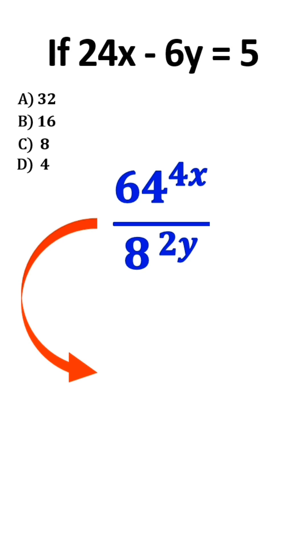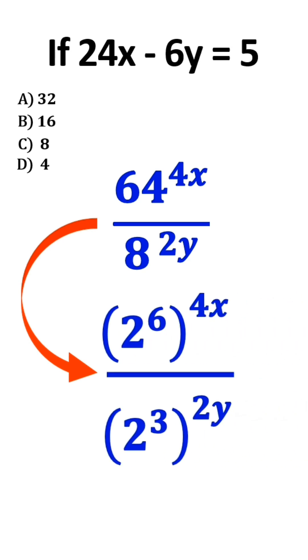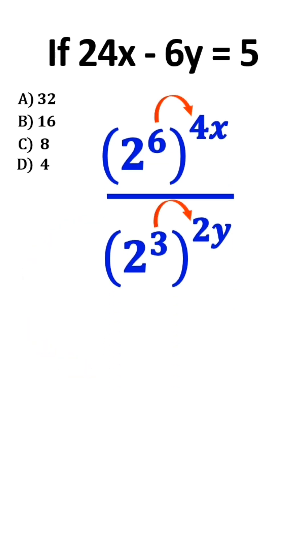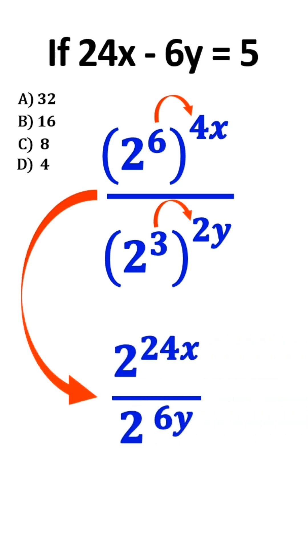Let's rewrite this expression as follows: 2 to the 6 to the power of 4x over 2 to the 3 to the power of 2y. Now, we multiply these ridiculous exponents. And it turns into 2 to the power of 24x over 2 to the power of 6y.